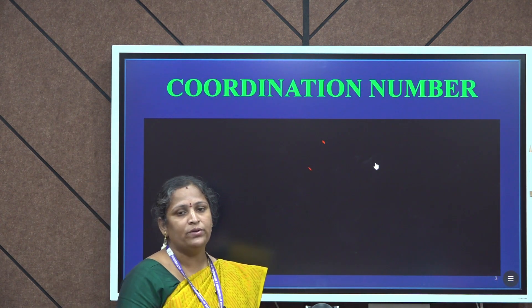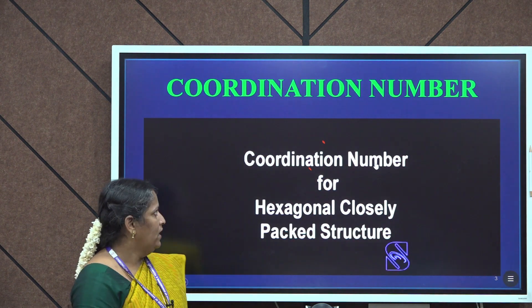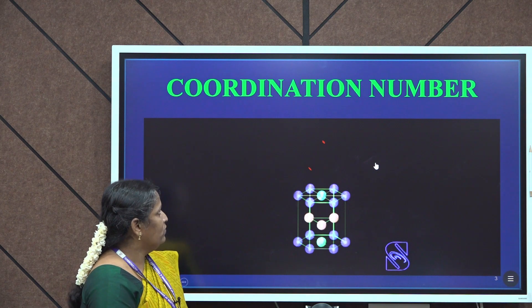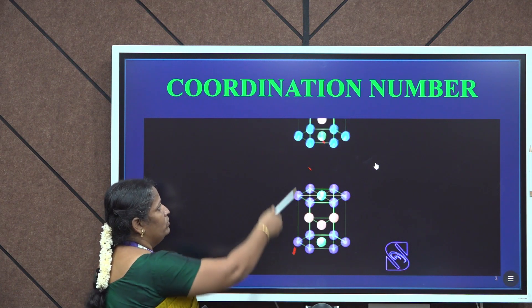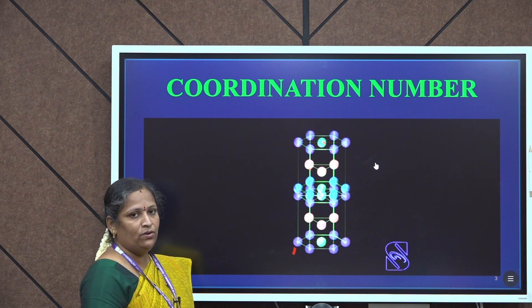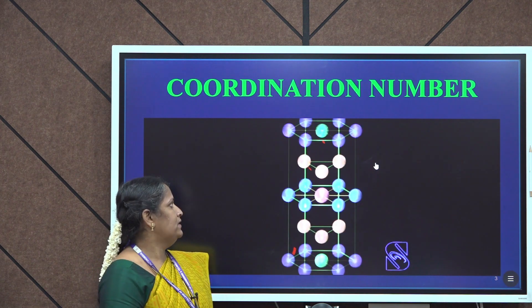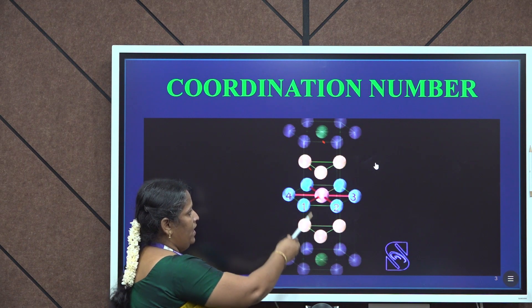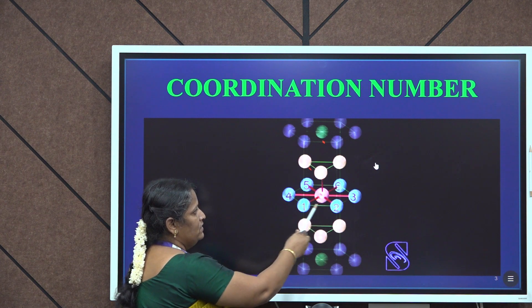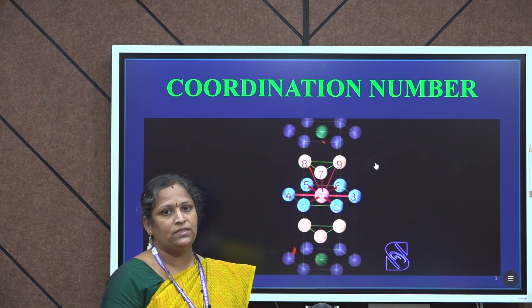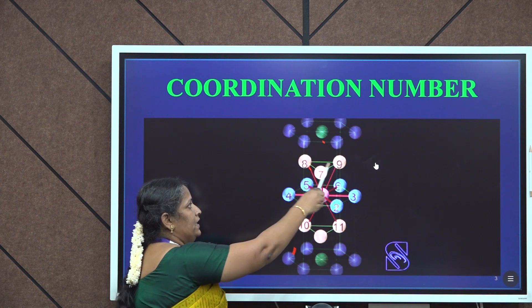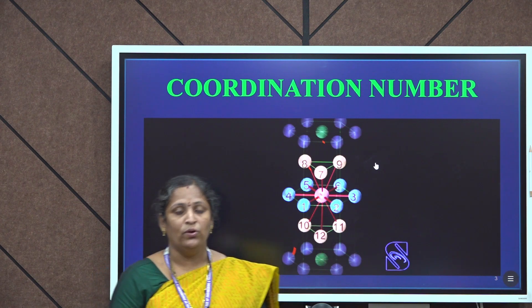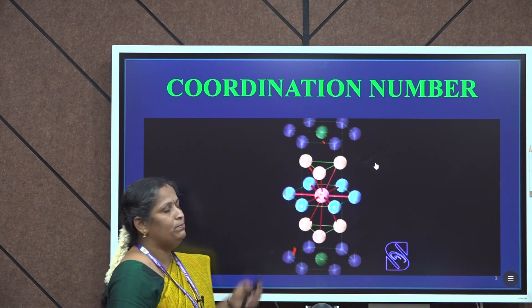Next, let us have a glance at how to calculate the coordination number of a HCP lattice. The coordination number is the number of nearest neighboring atoms to a particular atom. For this, we consider two HCP unit cells, one above the other, with three categories of atoms: corner atom, middle layer atom, and base centered atom. We take the reference atom as the base centered atom common to both unit cells. This reference atom has six atoms in the same plane at equidistant positions, three atoms internally positioned in the top unit cell, and three internally positioned atoms in the bottom unit cell. So the coordination number of the HCP lattice is 12.